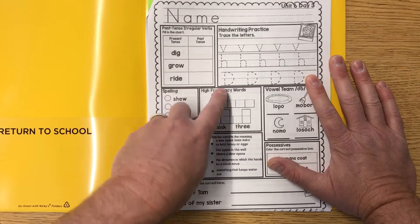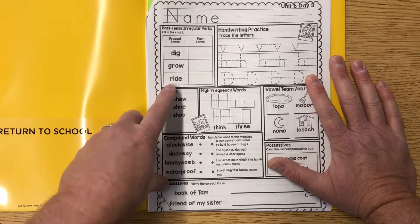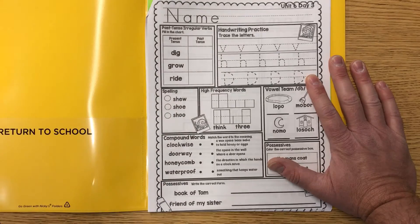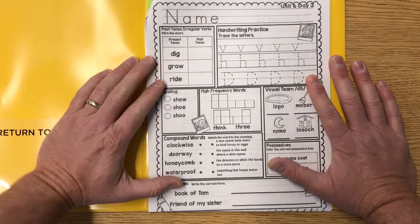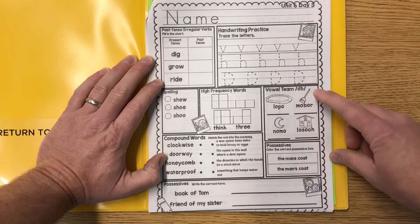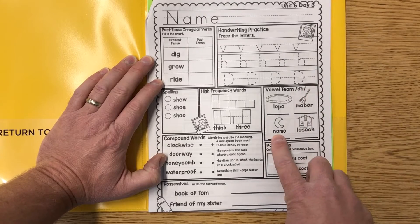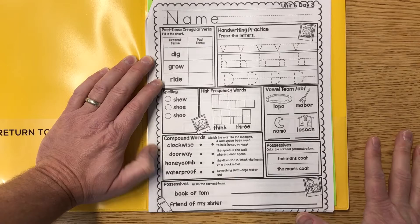Handwriting practice. We got D, H, capital D again. Spelling. Write the correct way to spell shoe. Shoe. Pick the right one. High frequency words for think and three. Vowel team again for the ooh sound. Ooh. Is that a moon? Figure those out for you.